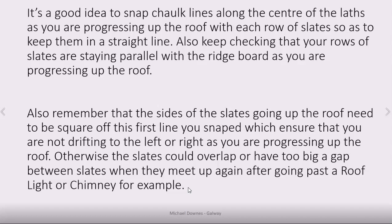The slates meeting each other on the far side of a chimney or Velux window should be four to six millimetres apart, side to side. You could end up with the gap being too big, or worse, the slates touching or overlapping each other. You need to bear this in mind as you progress with each separate set of slates either side of the chimney or whatever opening you're going past. That's the point made in this last slide.